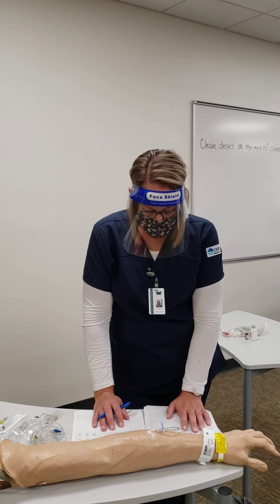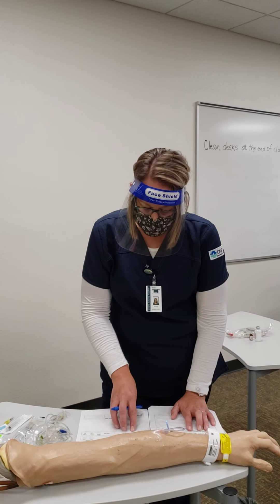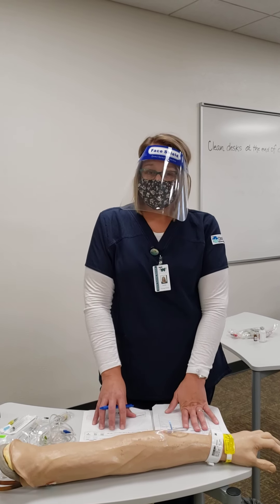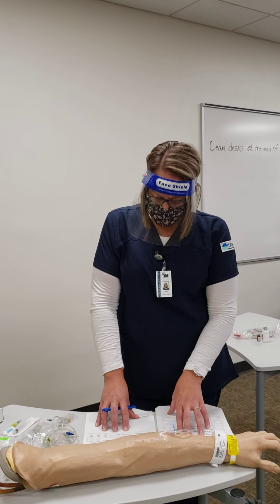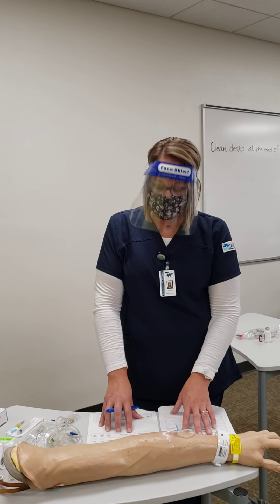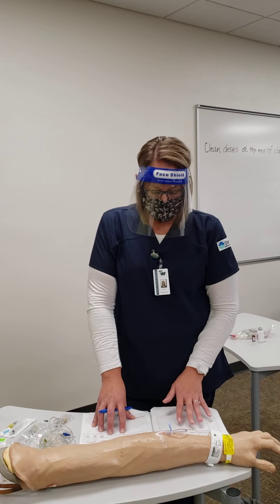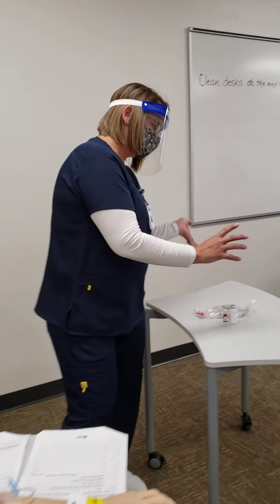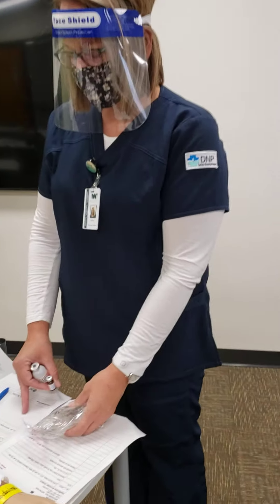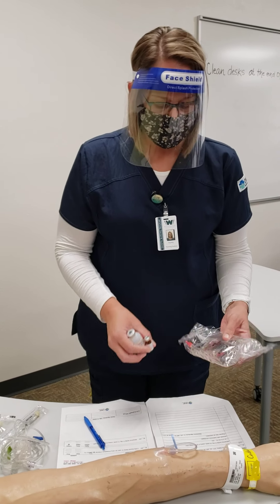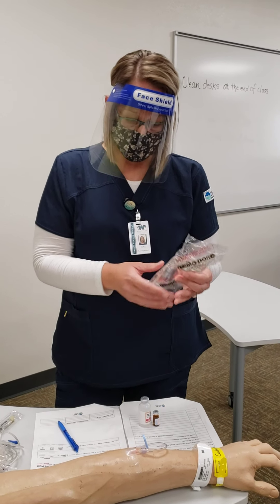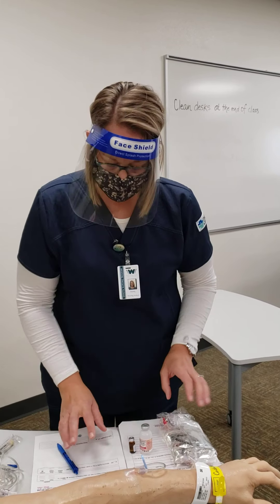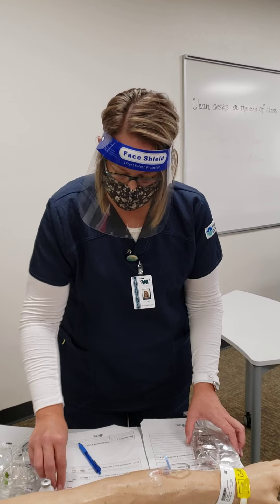Next we have morphine sulfate 4 milligrams IV push every two hours PRN for pain, and the MAR also says morphine sulfate 4 milligrams IV push every two hours PRN for pain. I've already done my dimensional analysis and I know I'm going to be giving 10 milliliters of potassium chloride into my normal saline bag, and 0.4 milliliters of morphine sulfate. I'm going to go to the Pyxis in the med room, pull my medications, bring them back to the MAR for my second med check. I have 0.9% normal saline, my potassium chloride, and my morphine sulfate — all correct according to my MAR. My second med check is good.